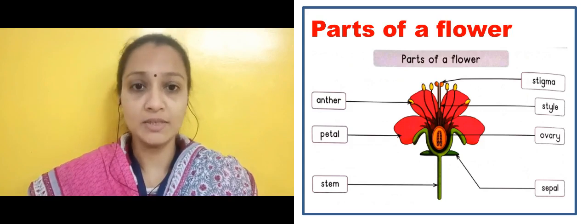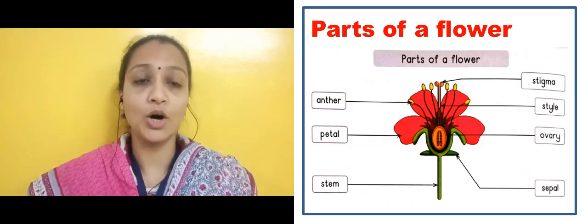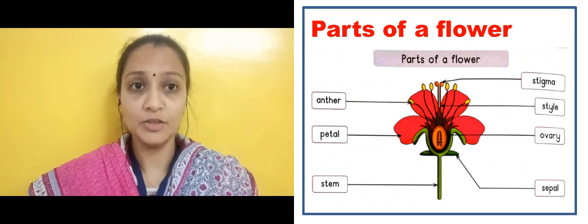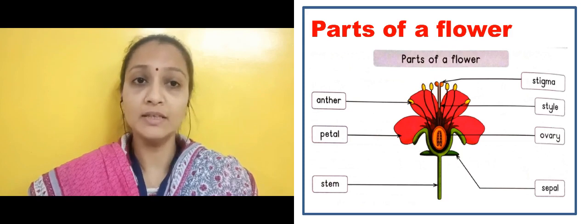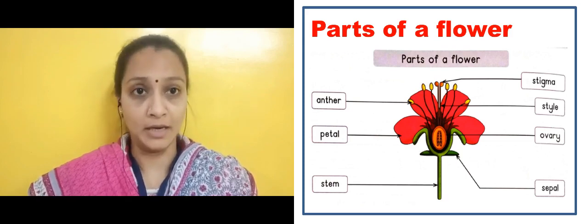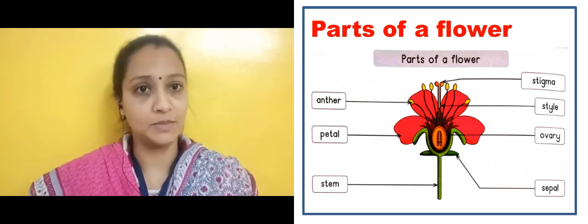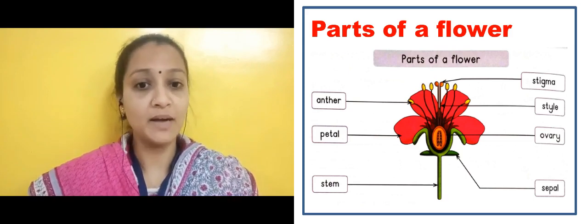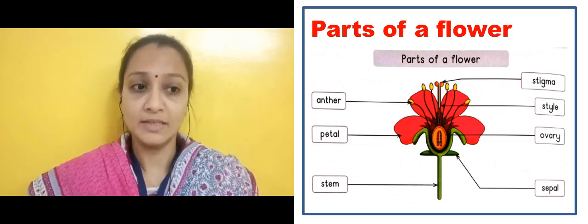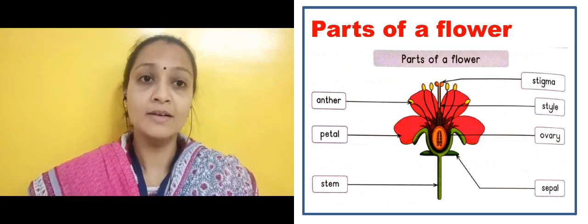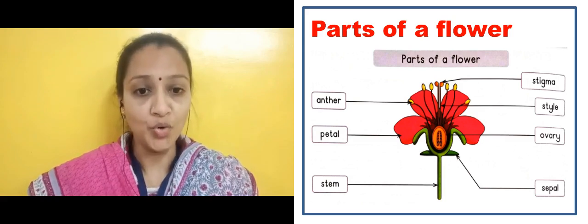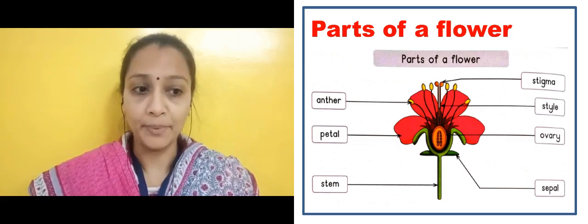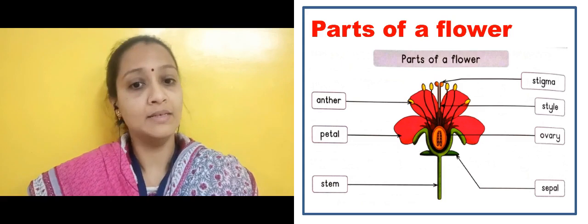Here students we will see the parts of a flower. Here you can see the parts of the flower. I will tell you just the names first, then I will explain in depth. So the first part is the Anther, then Stigma, Style, Ovary, Petal, Sepal, and Stem.